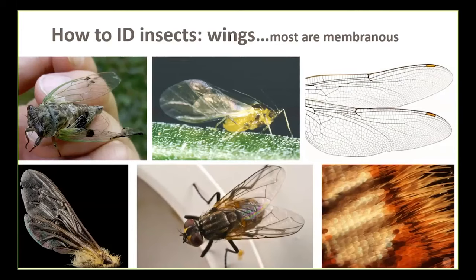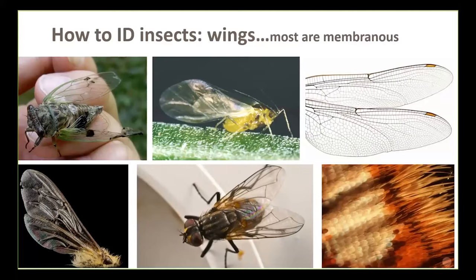When I get a new sample I don't immediately recognize, the first thing I do is look at the wings. Most insects have a clear membranous wing — some are simple clear sails guided by wind, others have veins and cross-veins adding rigidity for agile flight. In the lower right you see wings covered with scales, common in butterflies and moths, where colorful scales create the patterns we use to recognize different species.